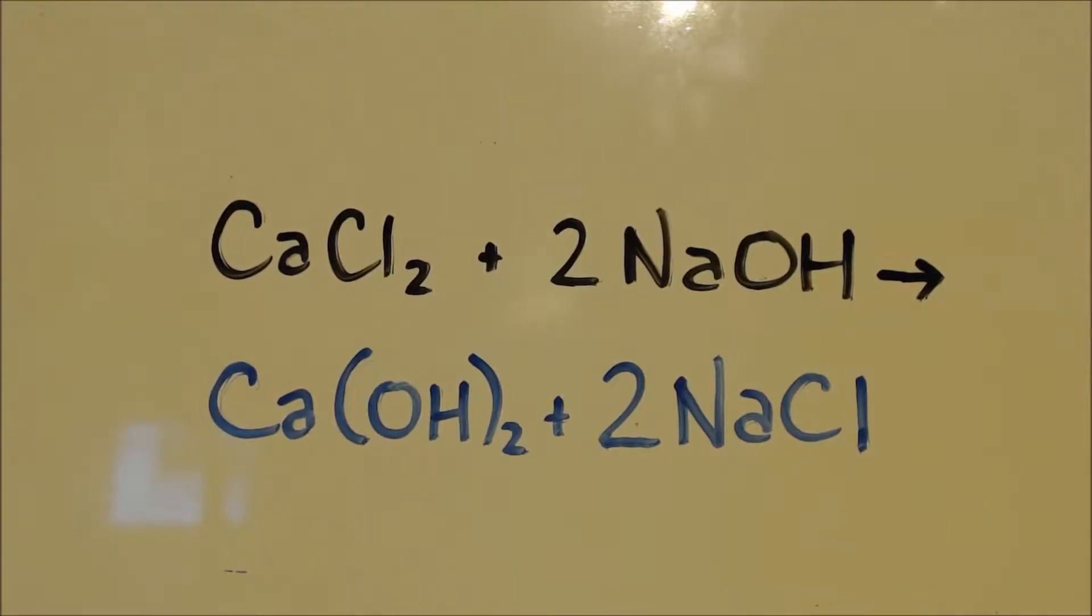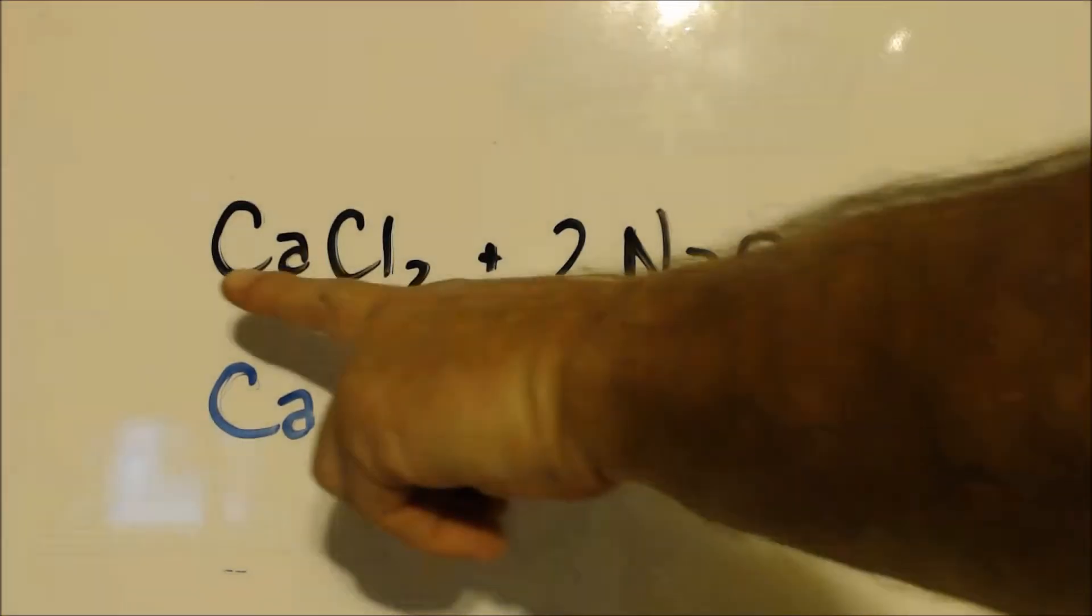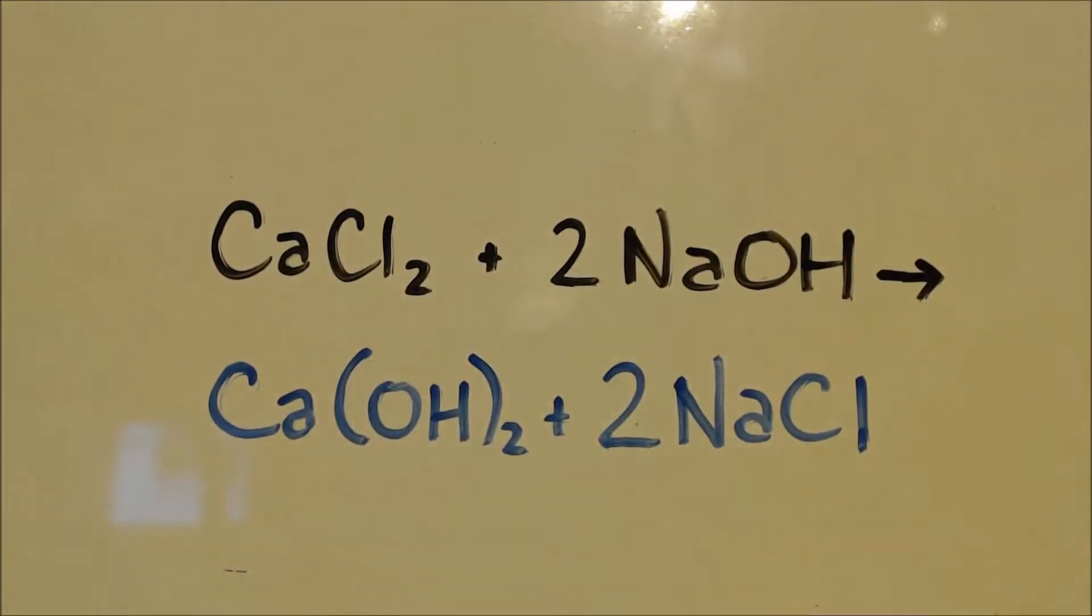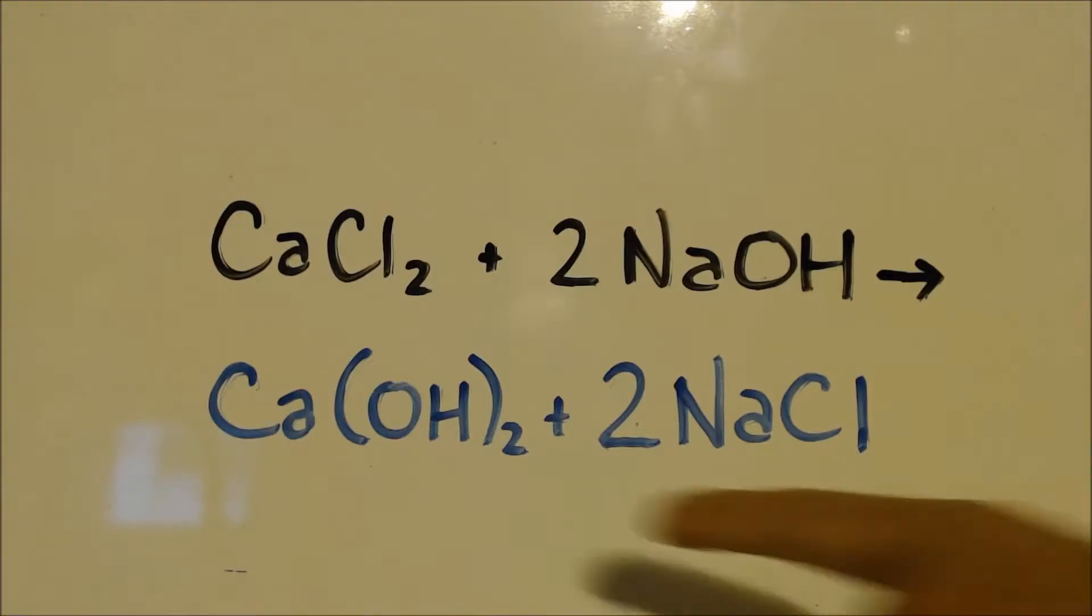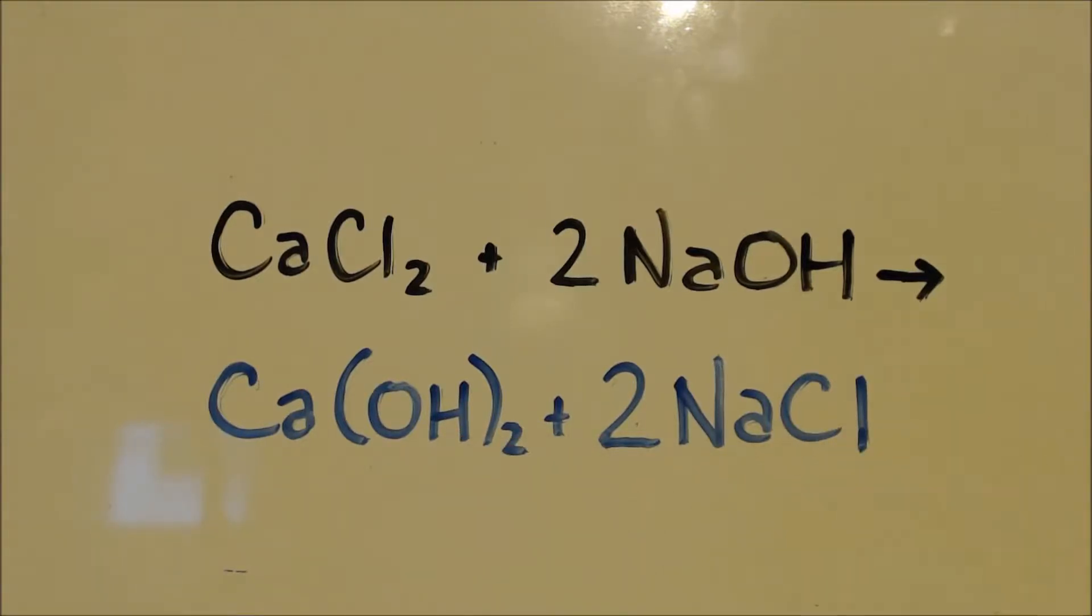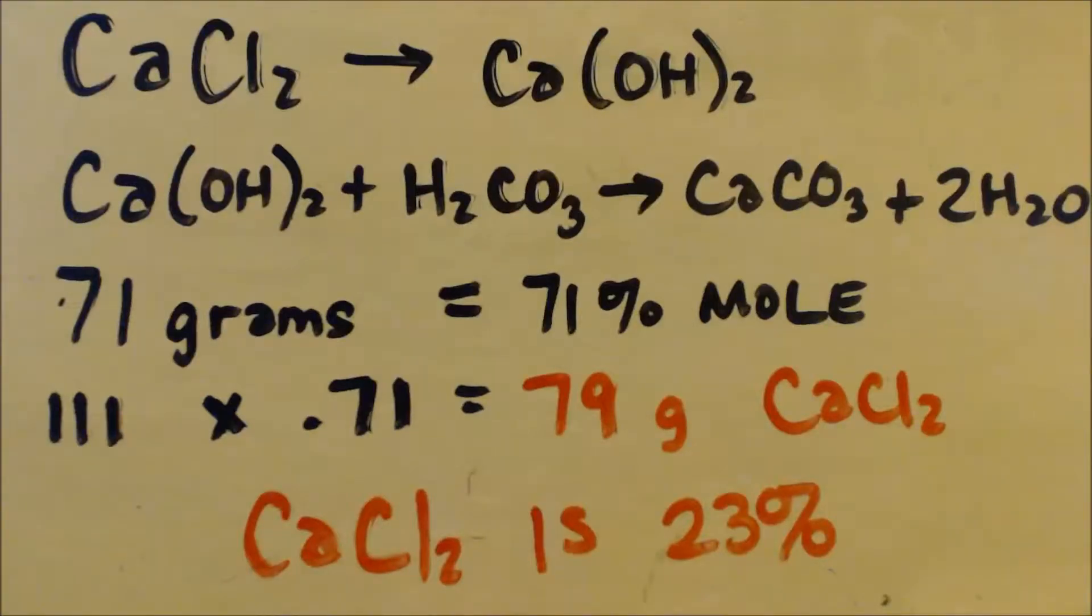This is John Black, superchemist, here to show you how to make some calcium hydroxide. Here's the equation: I'm going to use some calcium chloride and some sodium hydroxide. You can see I need twice as much sodium hydroxide than I do calcium chloride. It will make calcium hydroxide and some table salt.